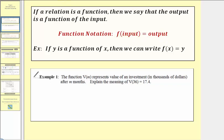Using this notation, notice how the input always goes inside the parentheses. F is the name of our function — we don't have to call the function f, though it is common to do so. On the right we have the output, also known as the function value.